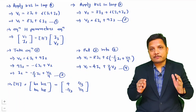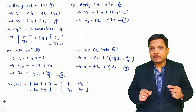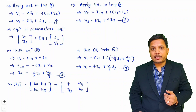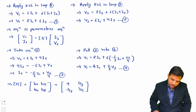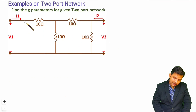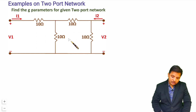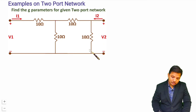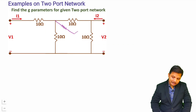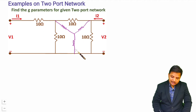Students should practice this approach to calculate h parameters. Now I will give you one more problem based on g parameters to further strengthen your understanding. We have a two-port network for which we need to find g parameters. When you have this type of network, converting it to a pi or T-shaped network makes the calculation easier. I will convert the delta connection into a star, and once that is done, g parameters can be found easily.